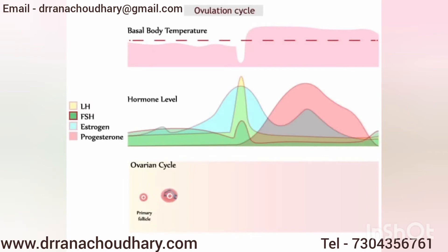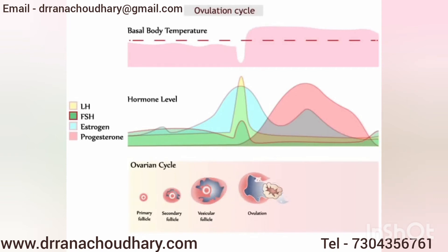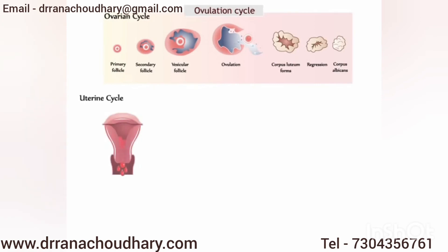The developing follicle starts growing once you get your menses from day 2 and 3 of your menstrual period. The dominant follicle, that is follicle size more than 8-10 mm, starts growing and somewhere in your mid-cycle, maybe on day 13, 14 or 15, the mature egg is released from the follicle. The remaining shell forms the corpus albicans and the corpus luteum. If there is no pregnancy, the remaining shell gets absorbed.